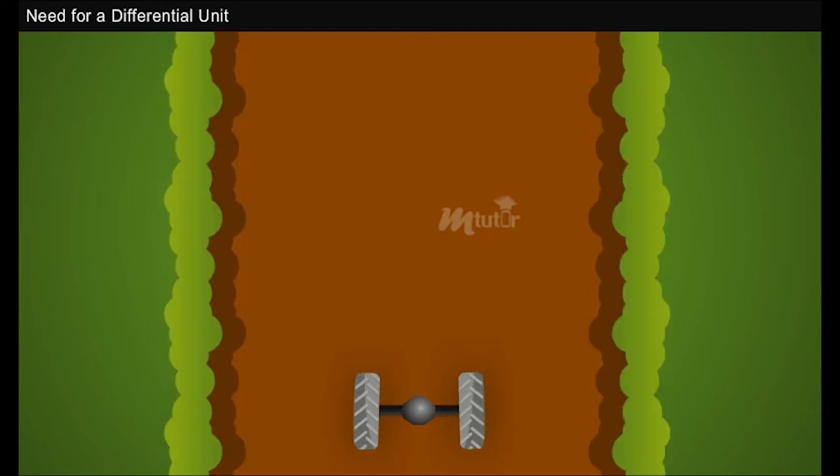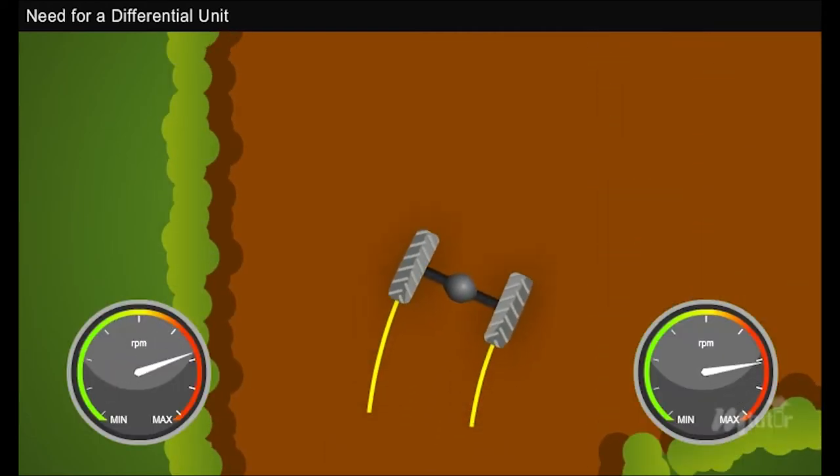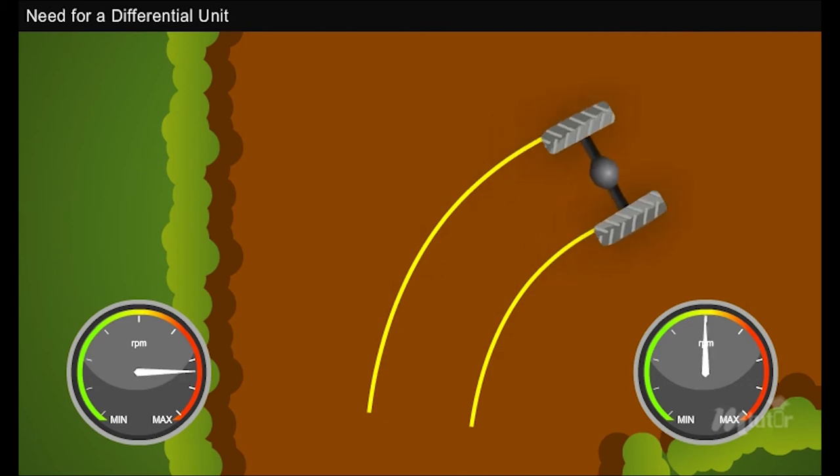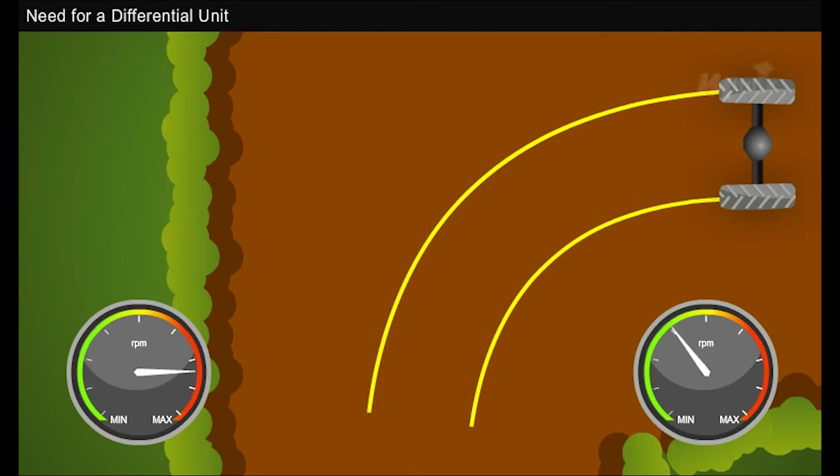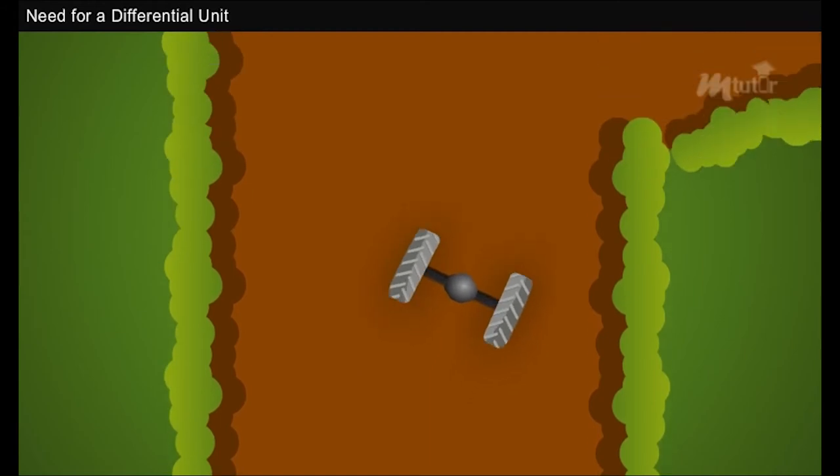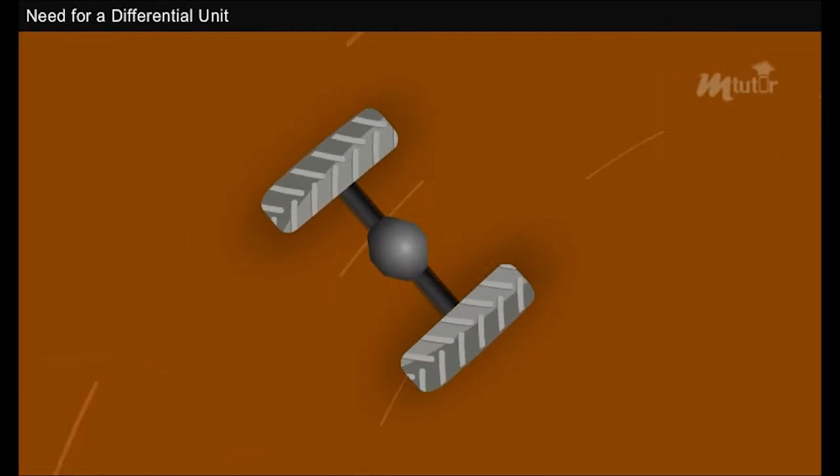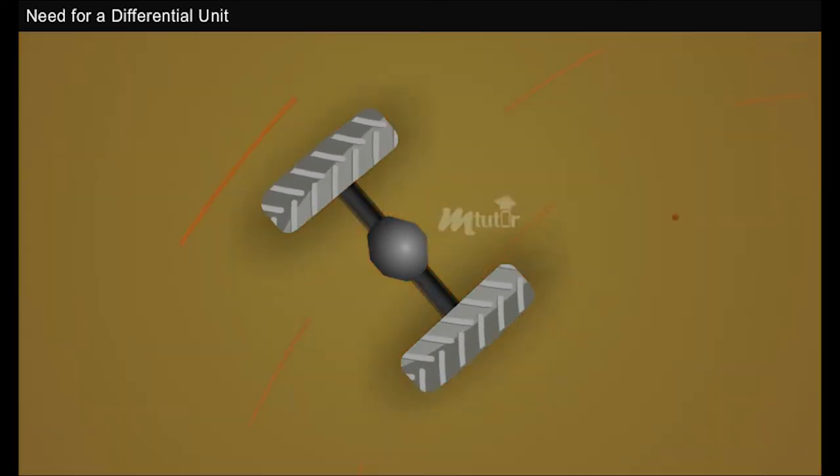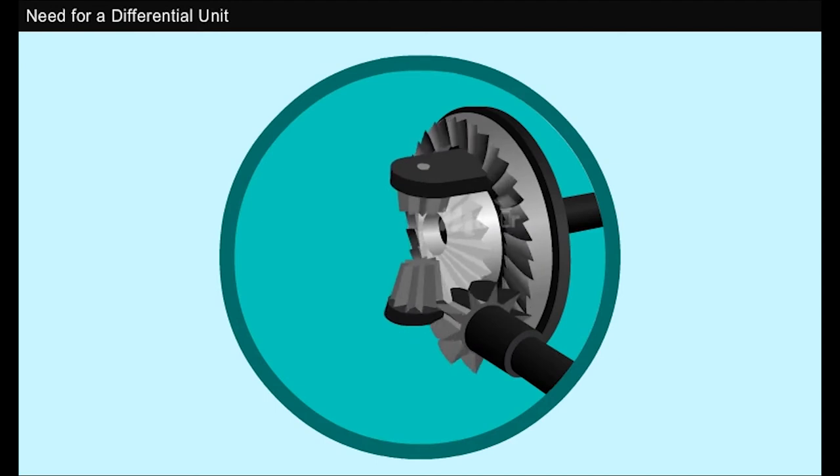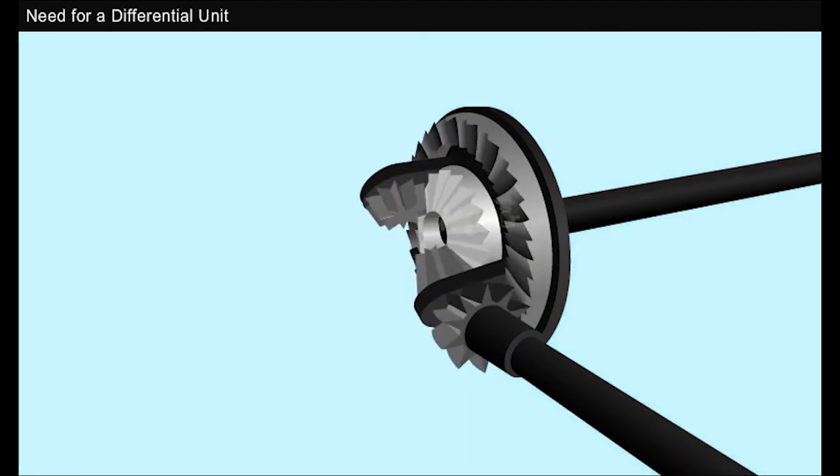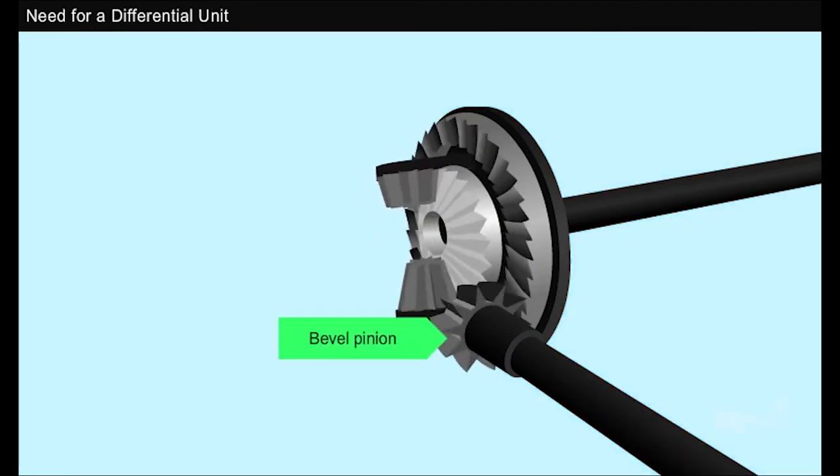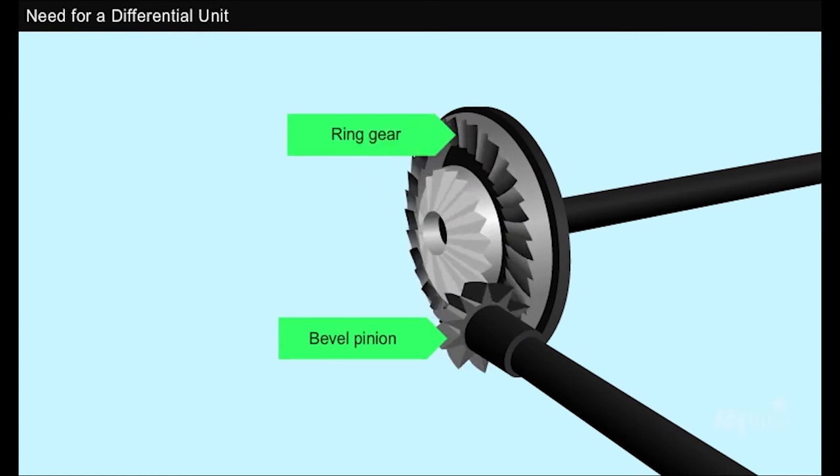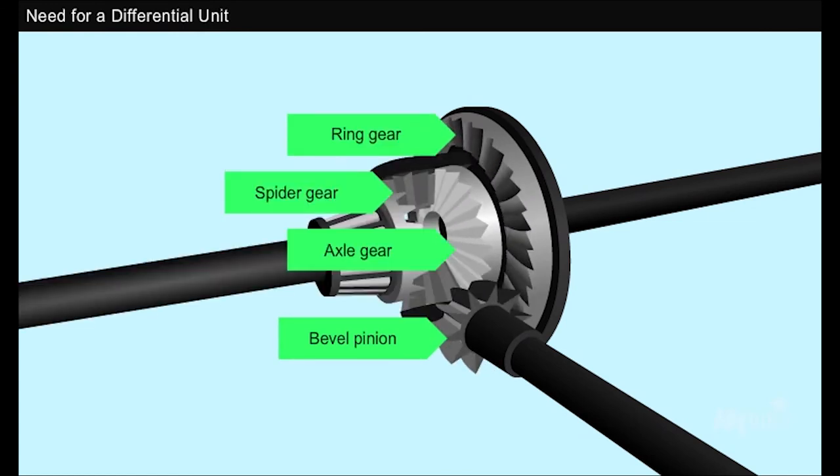In order to avoid the sliding of the outer wheel and slipping of the inner wheel, these wheels should be rotated at different speeds. The device that helps a vehicle achieve different wheel speeds is called a differential. The main function of a differential is to allow each wheel to rotate at different speeds. A differential unit houses a number of gears that are engaged with one another.